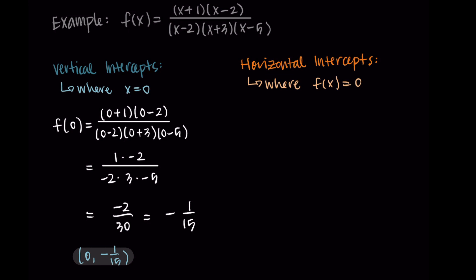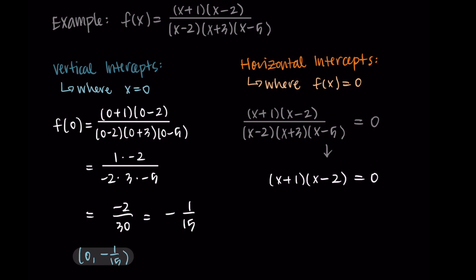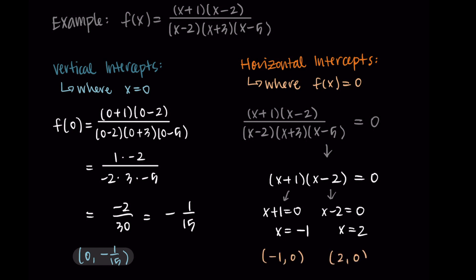Now for horizontal intercepts — this is where f of x equals 0. When we have a fraction equal to 0, this only happens when the numerator is equal to 0. So we take the numerator, x plus 1 times x minus 2, and set it equal to 0. Setting x plus 1 equals 0 and x minus 2 equals 0 gives us x equals negative 1 and x equals 2. So the horizontal intercepts are at negative 1, 0 and 2, 0.